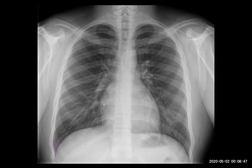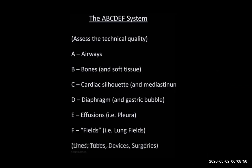This is the frontal radiograph. We pass through the ABCDEF system according to our practical sessions. We have A for airway, B for bones and soft tissue, C for cardiac silhouette and mediastinum, D for diaphragm — right hemidiaphragm and left hemidiaphragm — and gastric bubble assessment, which is located on the left side, for assessment of pleural effusion and the lung fields.